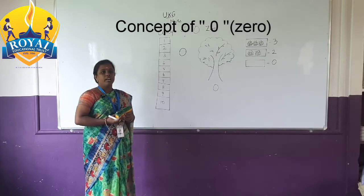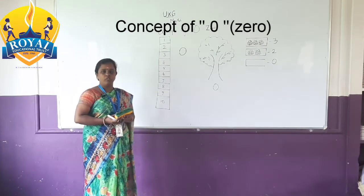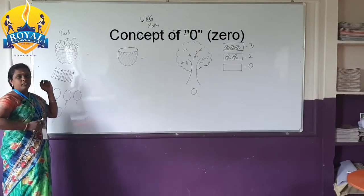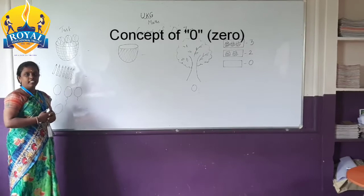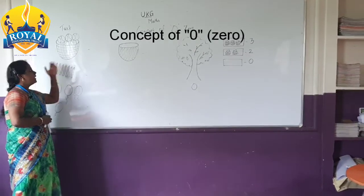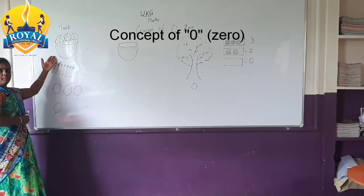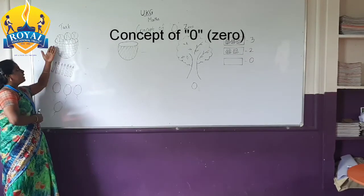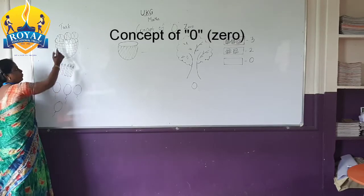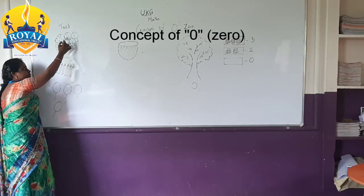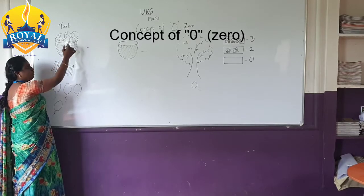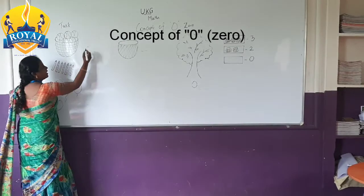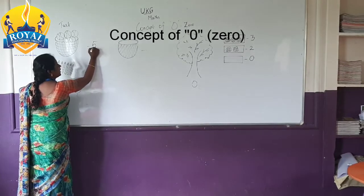I hope you all understood the concept of 0. Now let's do one task. What is this basket? These are balls. How many balls here? 1, 2, 3, 4, 5. How many balls? 5 balls.